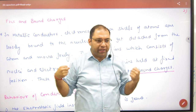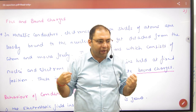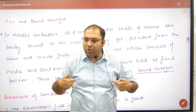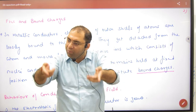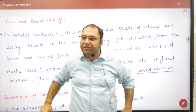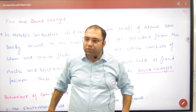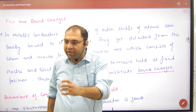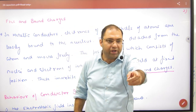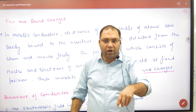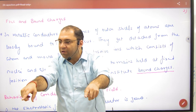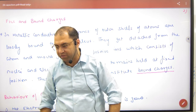The electrons will move in the direction opposite to the applied electric field, because the applied electric field forces all the electrons. So these electrons are movable — they are free charges. And the positive charges that remain sitting are the bound charges.